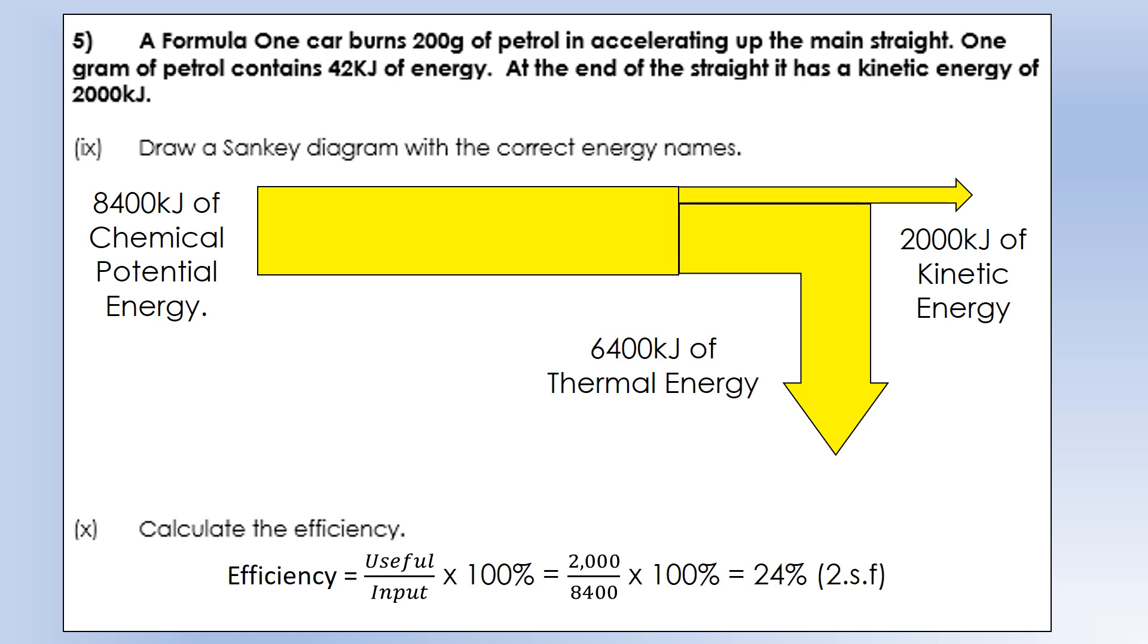Formula One car burns 200 grams of petrol when accelerating up a straight. One gram has 42 kilojoules of energy. At the end of the straight, it has kinetic energy of 2,000 kilojoules. We first need to calculate the total energy in the form of chemical potential energy. We do 200 times 42, which is 8,400 kilojoules of chemical potential energy.